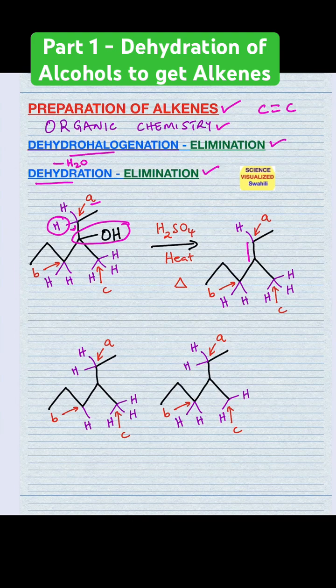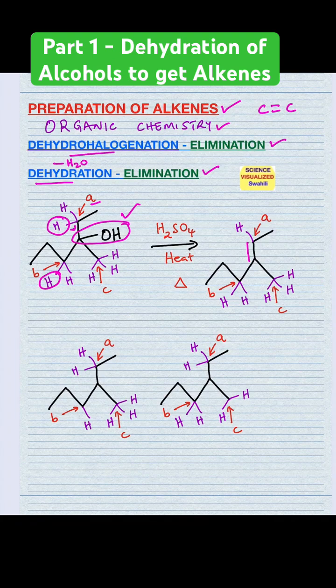The other option is losing hydrogen at carbon labeled B, so this carbon here. When you lose that hydrogen together with the OH, you end up with a double bond at this position. And then the last one,